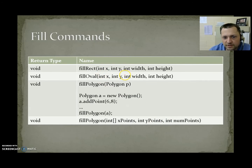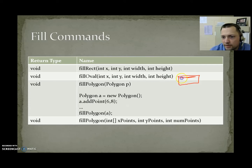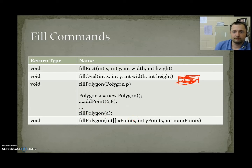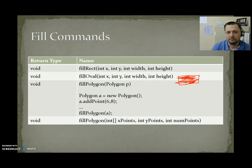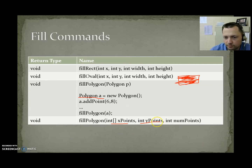Fill commands work exactly like the draw commands, except the draw commands only drew the edges, while the fill commands fill the shape in with the current color. So fillRect(x, y, width, height) fills the rectangle solid. We have fillRect, fillOval, and two versions of fillPolygon — one using a Polygon object, and one using two arrays of x and y points.